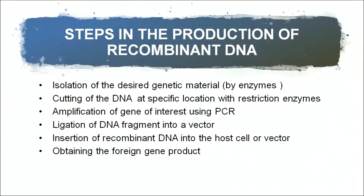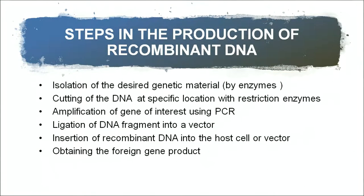What are the steps involved in the production of recombinant DNA? The first step is the isolation of the desired genetic material from a cell by the activity of enzymes, since a cell contains RNA, proteins, carbohydrates, and lipids — all these materials need to be discarded to get purified genetic material. Then comes the cutting of DNA at specific locations with restriction enzymes. The characteristic of restriction enzymes that is helpful is that they create sticky ends, because they recognize palindromic sequences.